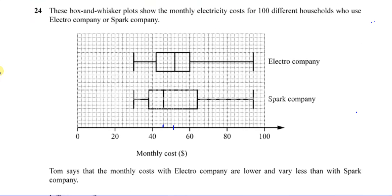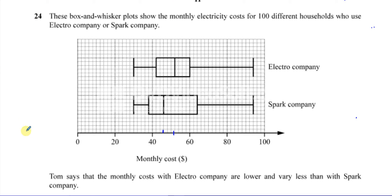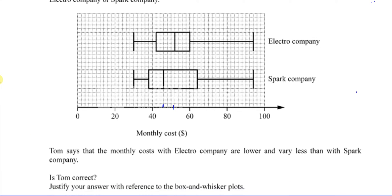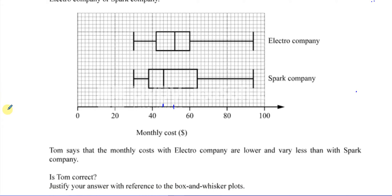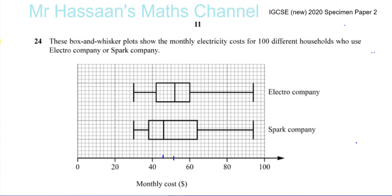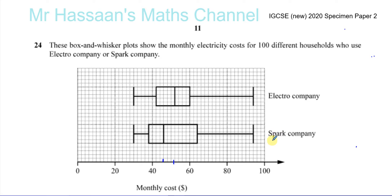We have to see if what Tom says is sensible or not. Tom says that the monthly costs with Electro Company are lower and vary less than with Spark Company. Is he correct? Justify your answer with reference to the box and whisker plots. So you don't just say yes or no — you have to justify your answer with reference to the box plot.